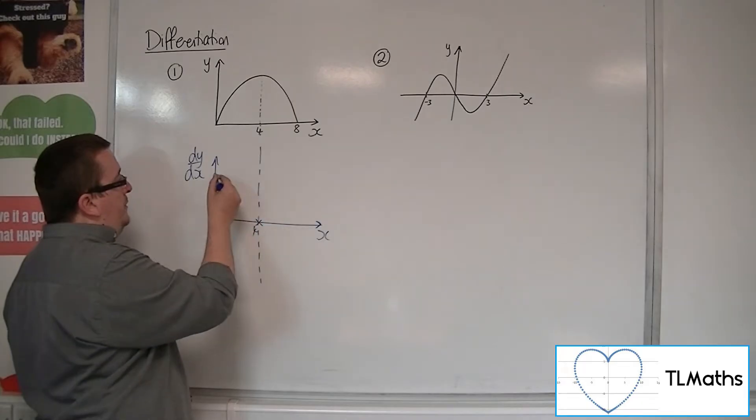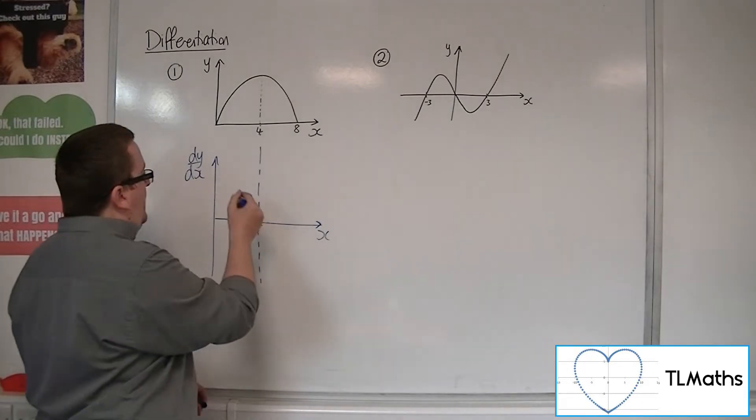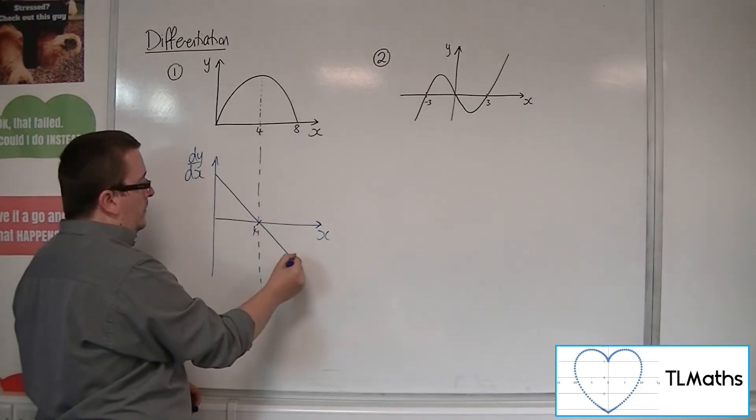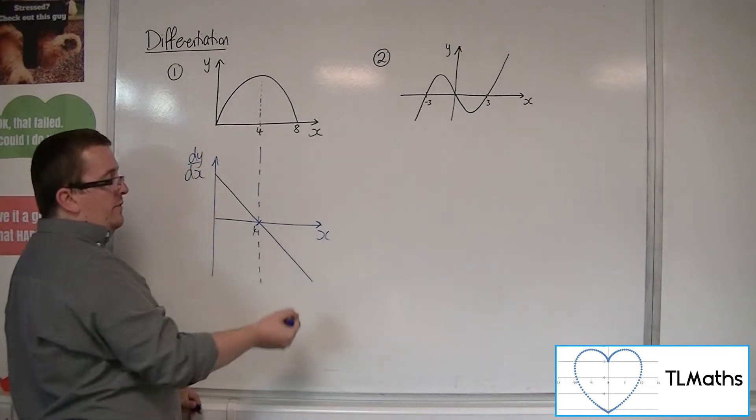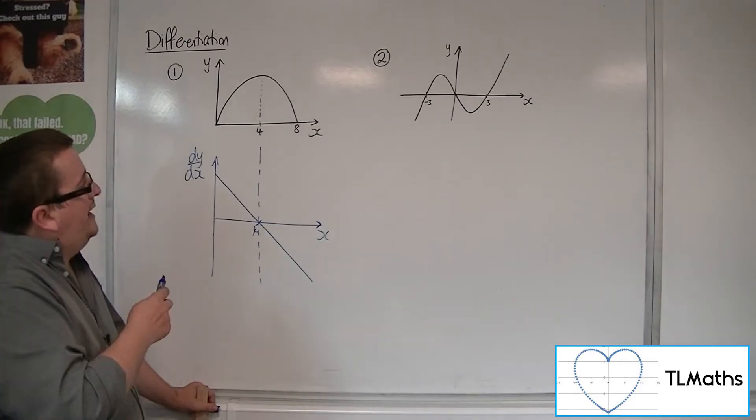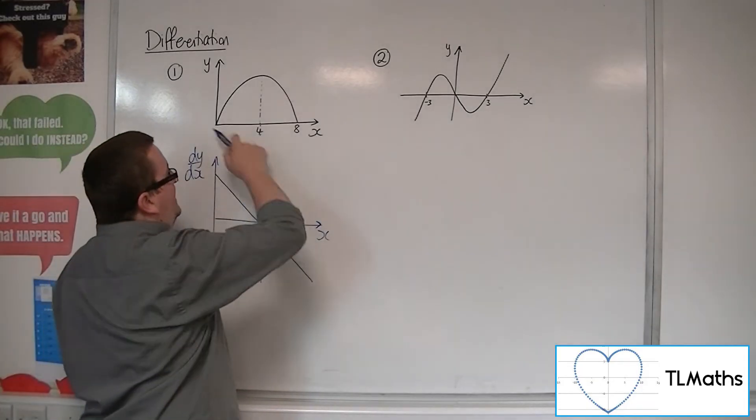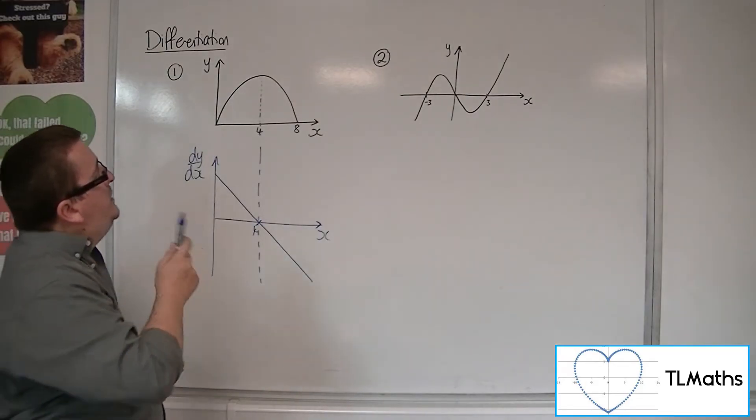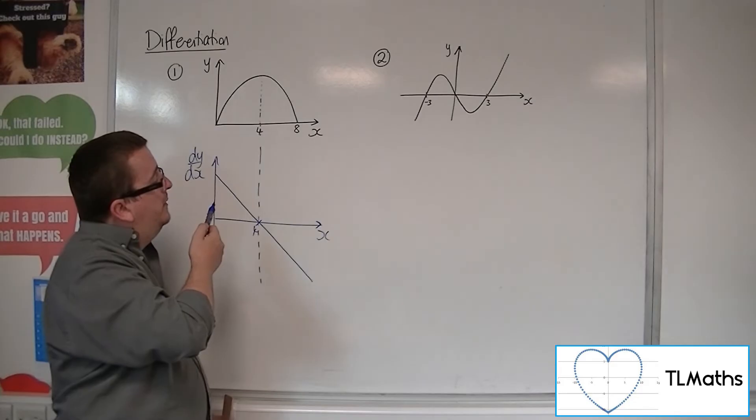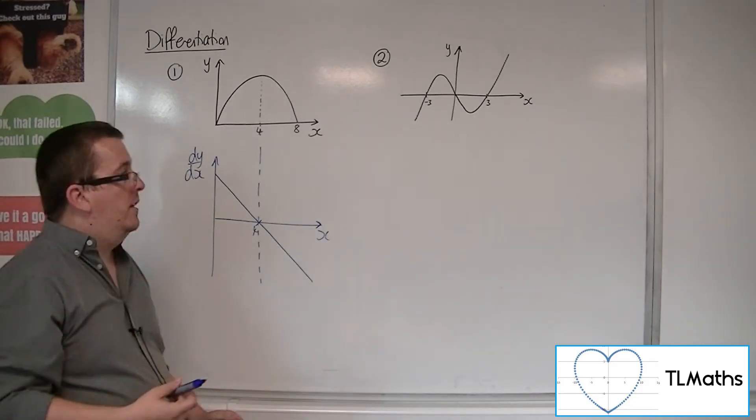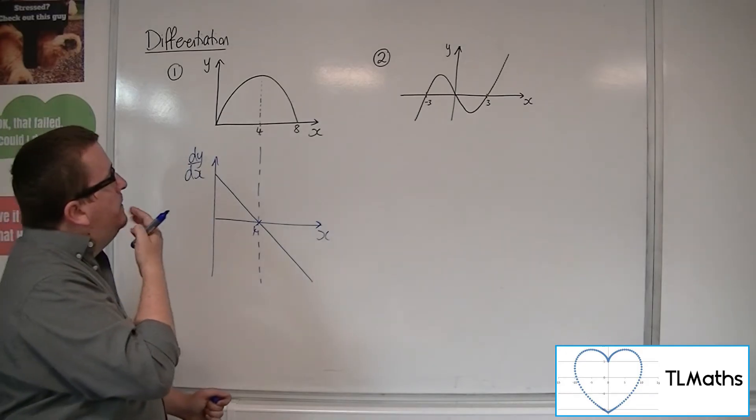So what we'll find is that as we get towards 0, here's where it's positive, there's where it's negative, where it goes below the axis. Now, in all likelihood, this is a quadratic, doesn't have to be, but if we took it to be a quadratic, then this would definitely be a straight line.